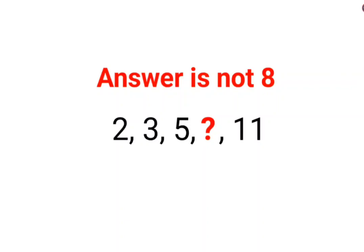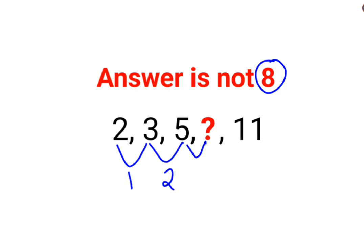Welcome everyone. A lot of people thought that the answer for this one was supposed to be 8. Because the difference between 2 and 3 is 1, the difference between 3 and 5 is 2. So the next difference should have been 3, and then the next difference should have been 4. So people thought that 5 plus 3 is supposed to be 8.